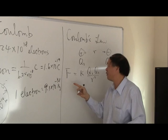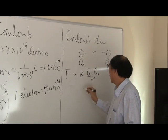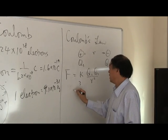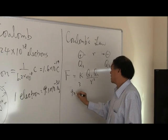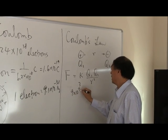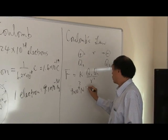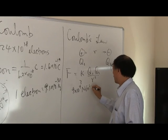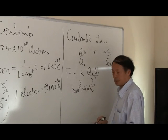And this force is an attractive force between the two charges. In this case here, K is equal to 9 times 10 to the 9 Newton meter squared divided by coulomb squared.